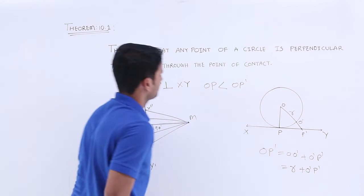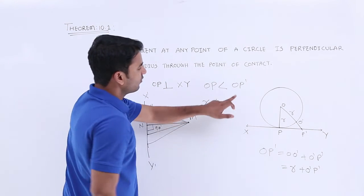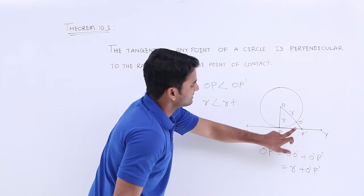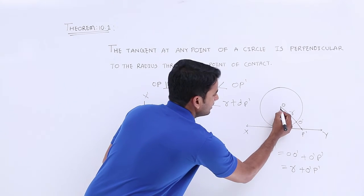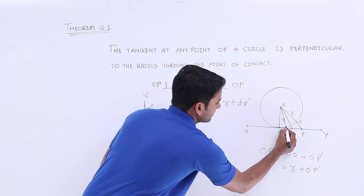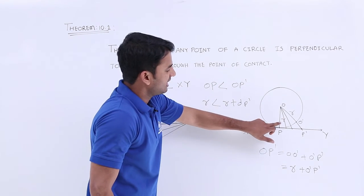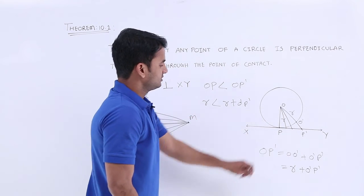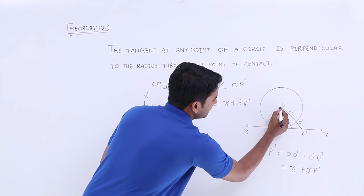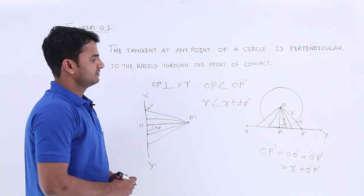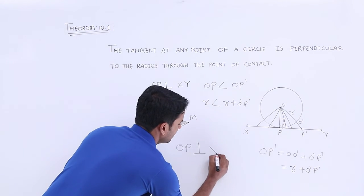Here OP is only the radius, while OP dash is the radius plus some extra part O dash P dash. If you draw another line, continuously the distance is decreasing, and at one particular point you get the shortest distance, that is r, which is OP. So similarly, just as we got 90 degrees before, this will also be 90 degrees. Based on this theorem, we can say that OP, the radius, is perpendicular to XY, the tangent.